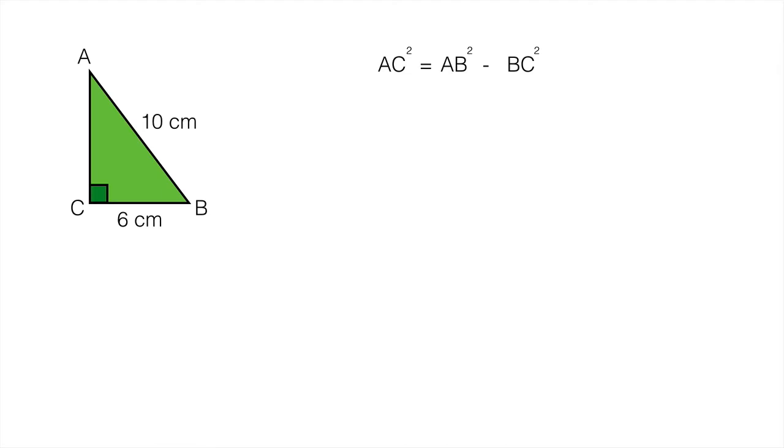Now I can substitute in some values. So AC² is equal to 10² minus 6². 10² well that's 100 and 6² well that's 36.